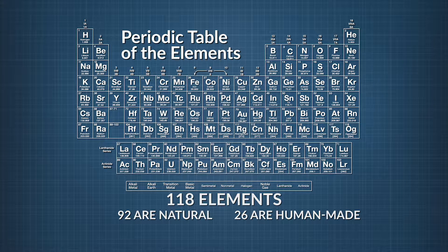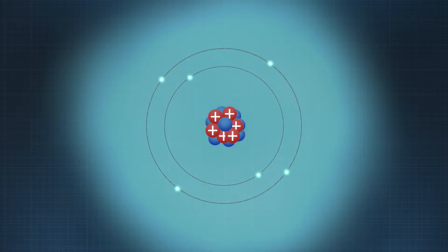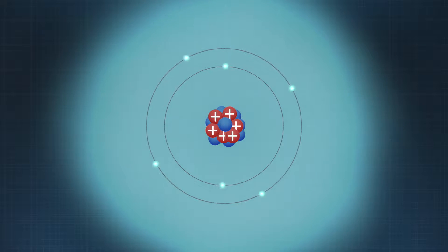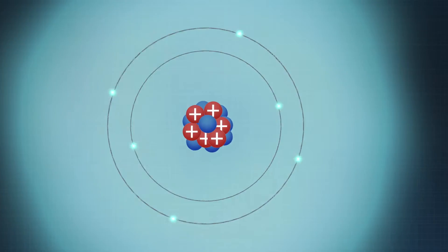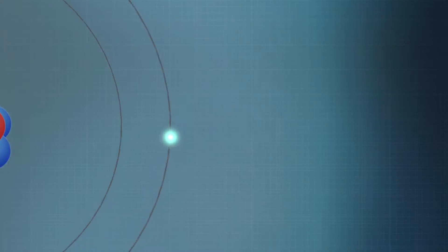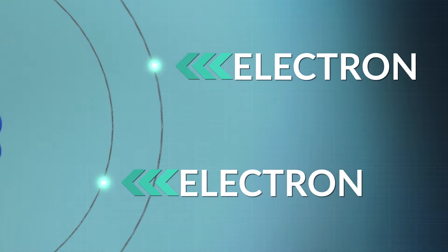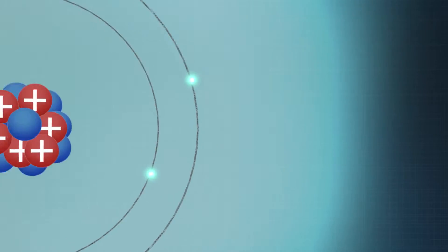These elements are specific atoms. Gold is one type of atom; carbon is another type. To better understand, let's take a look inside an atom, where we'll find even smaller particles: electrons, protons, and neutrons. At the center of every atom is a nucleus — that's where the protons and neutrons can be found. The electrons orbit outside the nucleus in an electron cloud.